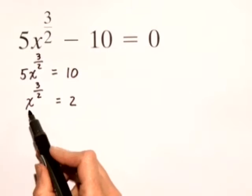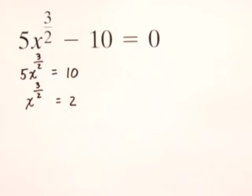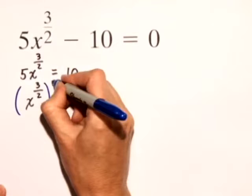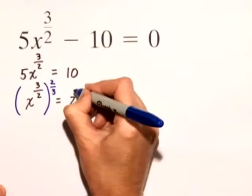Now, we're trying to isolate x, so what we need to do is take both sides of this equation and raise it to the 2 thirds power.